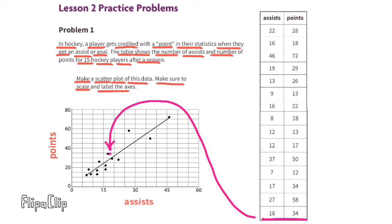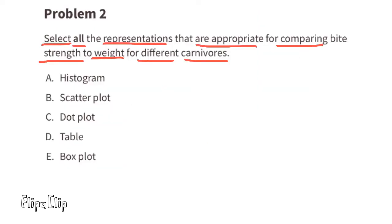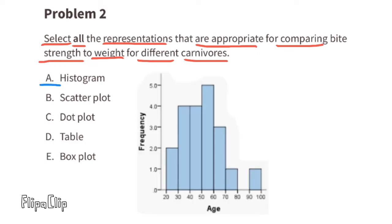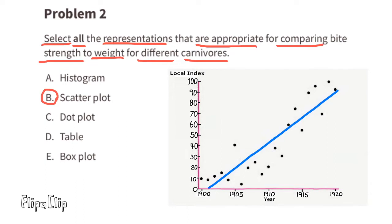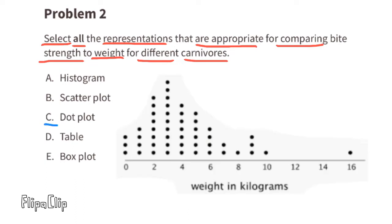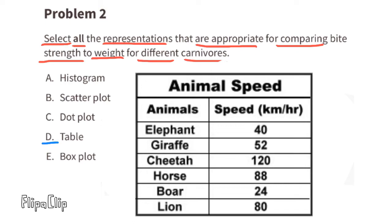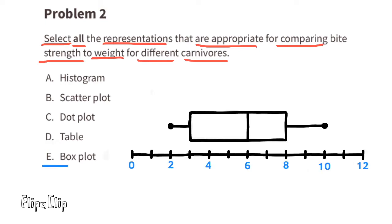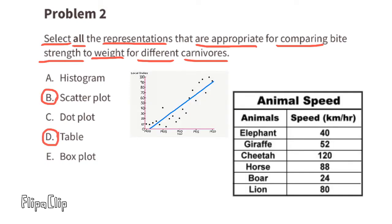Problem number 2: Select all the representations that are appropriate for comparing bite strength to weight for different carnivores. First, let's take a quick look at examples of each of these types of representations of data: a histogram, scatter plot, dot plot, table, and box plot.